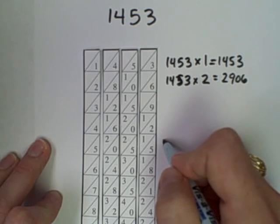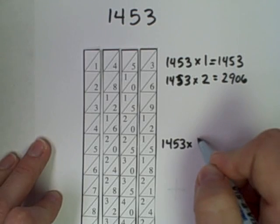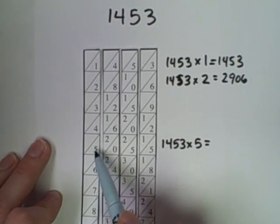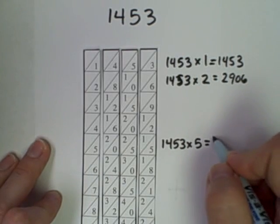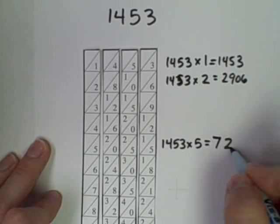Down here at the 5 row, 1,453 times 5 would be 7,000, the 5 and the 2, 200, the 0 and the 2, 60, 5. So that's 7,265.